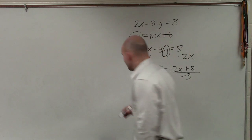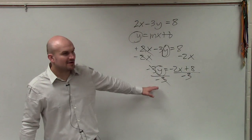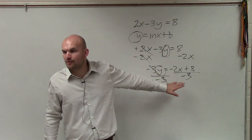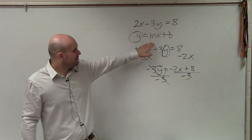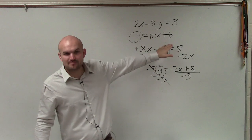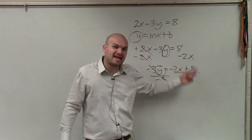Now when we were doing this last class period or last chapter, I would allow you guys to leave it in this kind of format. But now that we're writing things in slope intercept form, we want to be able to separate the mx and the b. So I need to make sure I understand that this is negative 2x plus 8.